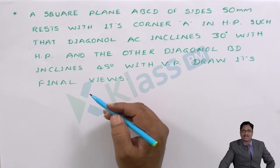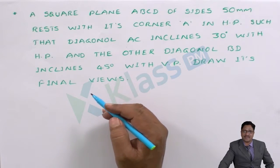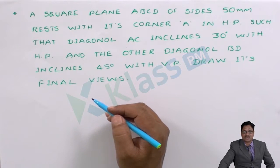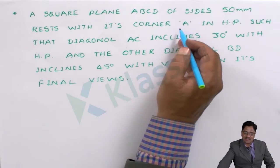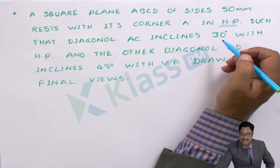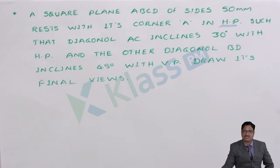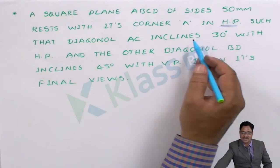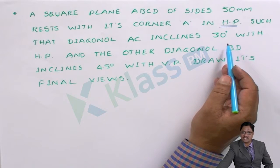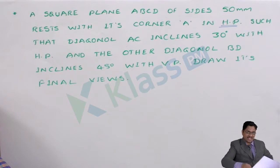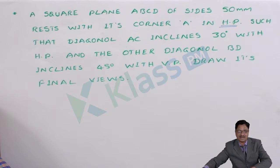Whenever a problem is given inclined to both the planes, you must identify the resting condition first. Here it is resting with corner A in HP, so the condition has been given for HP resting. By observing the resting condition we can initiate the solution. Since it is resting in HP, we initiate the HP projection, making diagonal AC parallel, because in the next stage diagonal AC will make inclination with HP.